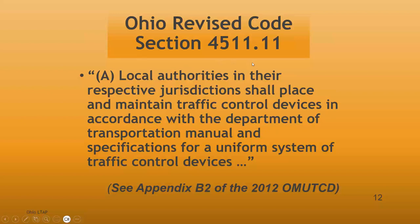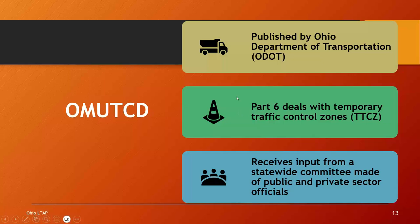To summarize: the OMUTCD is published by ODOT. Part 6 is what we'll be working on with this webinar series — it deals with temporary traffic control zones. The manual receives input from a statewide committee made up of public and private sector officials, and we've begun the process of organizing those officials for our updated supplement to the newly updated MUTCD.